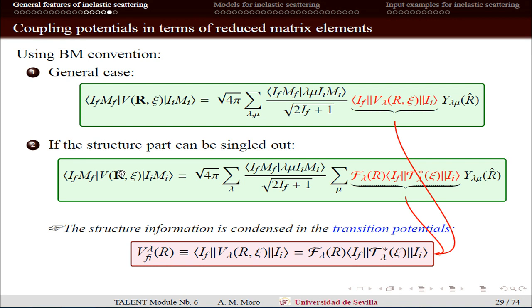Remember that after all these complications, we have to solve a set of coupled equations — or the code will solve for us a set of coupled equations. The ingredients of these coupled equations are the transition potentials that, after making a multipole expansion, are written in terms of these multipole transition potentials.